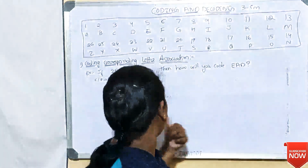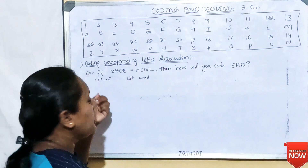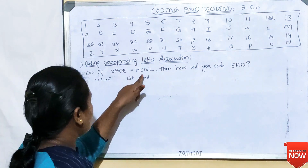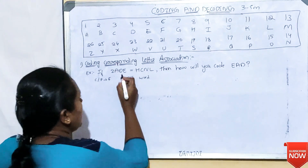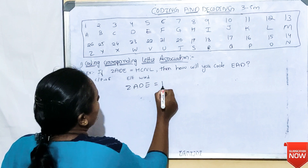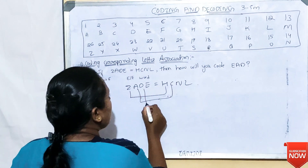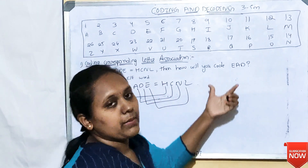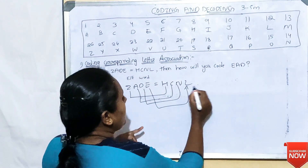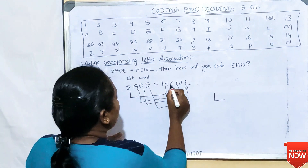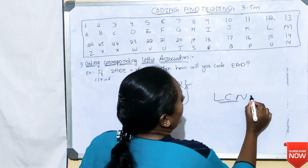The first pattern is coding by corresponding letter association. For example, if ZADE is equal to HCNL, then how will you code EAD? In ZADE equals HCNL: Z corresponds to H, A corresponds to C, D corresponds to N, and E corresponds to L. So for EAD, E corresponds to L, A corresponds to C, D corresponds to N — therefore EAD is coded as LCN.